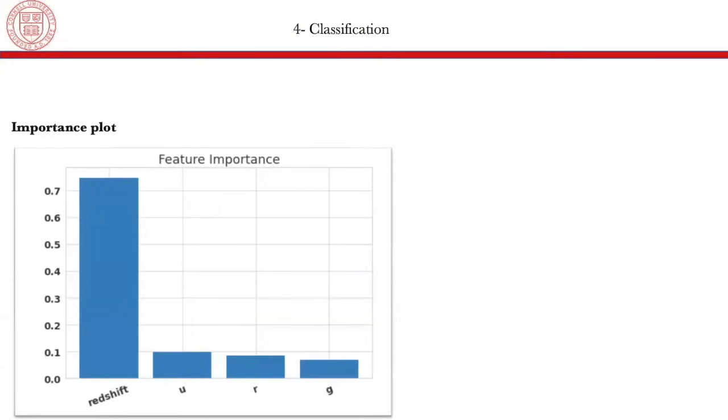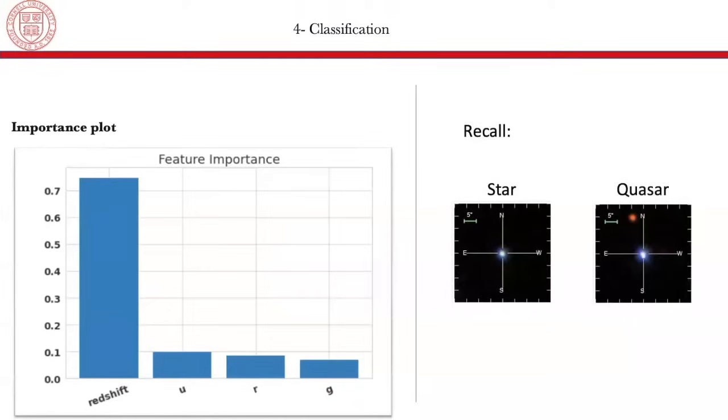And here is the importance plot. So this plot shows the importance of each feature that has been used in the random forest. So we can see here that the redshift is the most important feature in our training set. And this is predictable, actually, because if we recall our two images earlier, we had stars and quasars, and we cannot distinguish stars from quasars based on photometric data U, R, G, I, and Z. So in this case, this is a confirmation that the redshift is actually the most important feature.